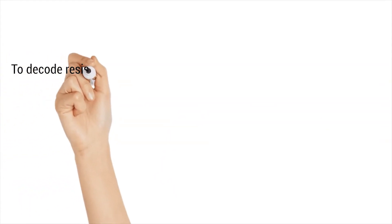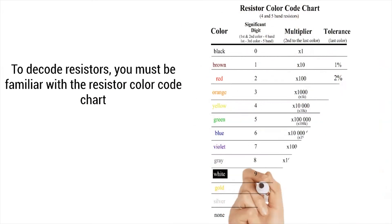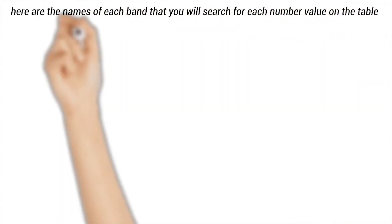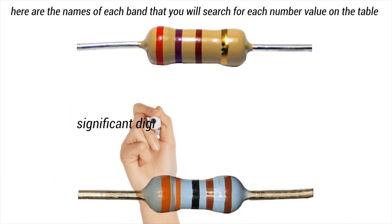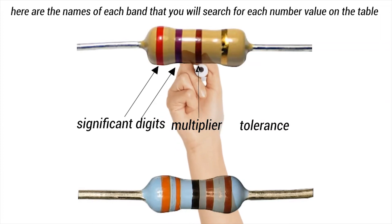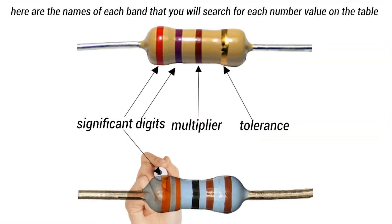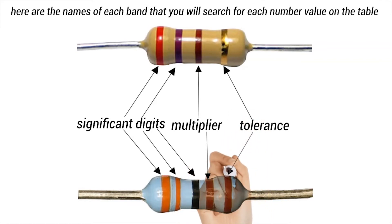To decode resistors, you must be familiar with the resistor color code chart. Here are the names of each band that you will search for on the table: significant digits, multiplier, and tolerance. There are two significant digits on a four-band resistor. The third band is the multiplier and the fourth band is the tolerance. There are three significant digits for a five-band resistor. The fourth color is the multiplier and the last color is the tolerance.